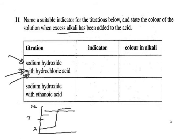Phenolphthalein changes colour in the region of the almost-vertical section of the graph; methyl orange changes around pH 3 to 4.5. The equivalence point is the midpoint of the vertical section. For strong acid to strong base, we could use either indicator. Phenolphthalein is colourless in acid and turns pink at neutralisation; methyl orange is yellow in acid and turns red at neutralisation.